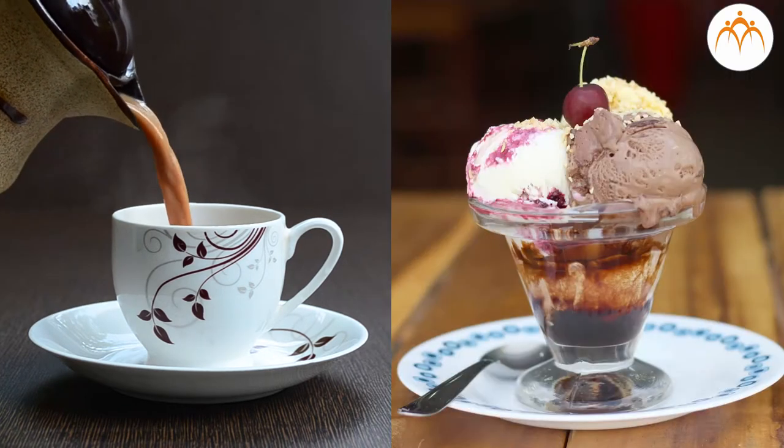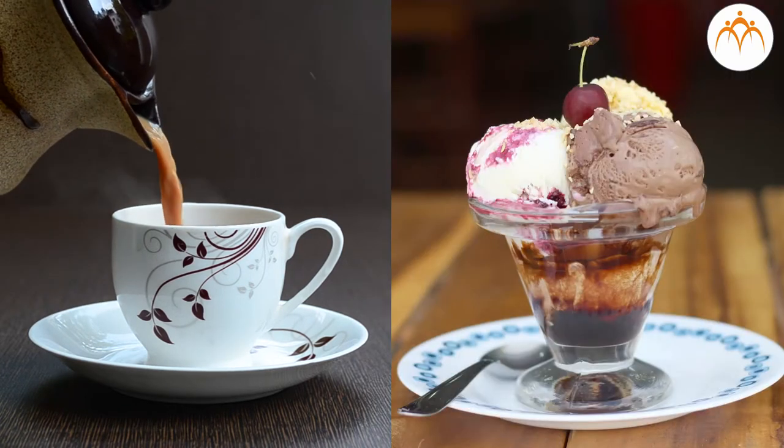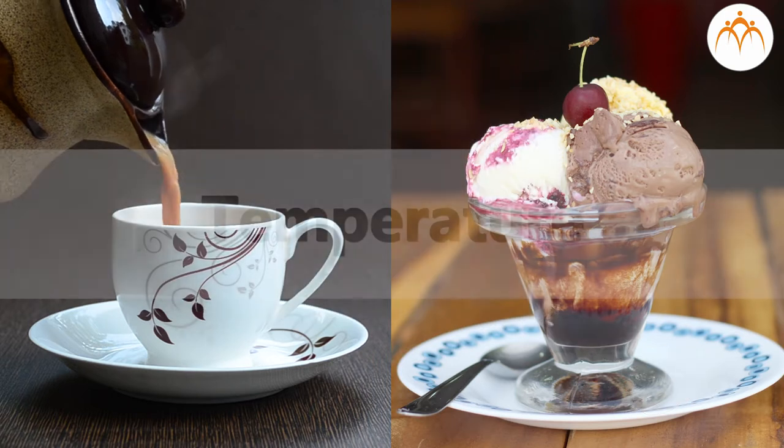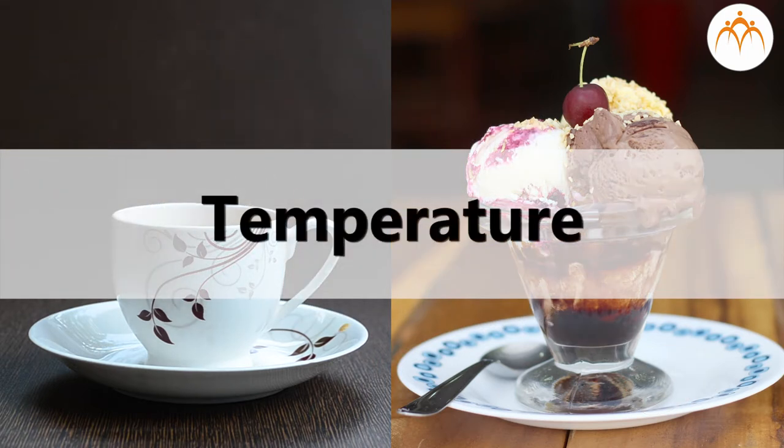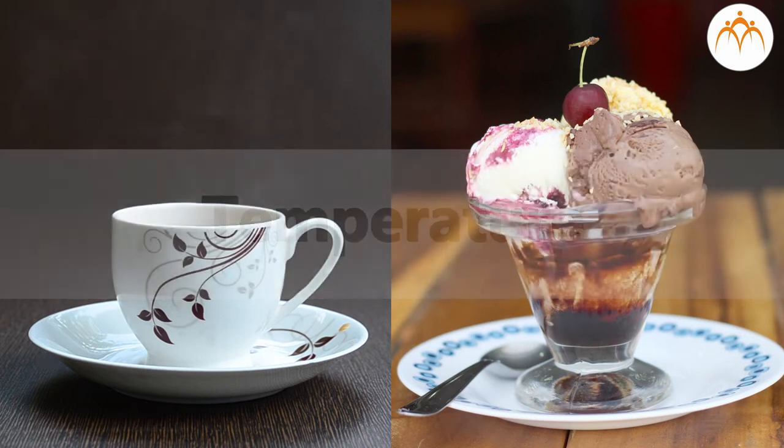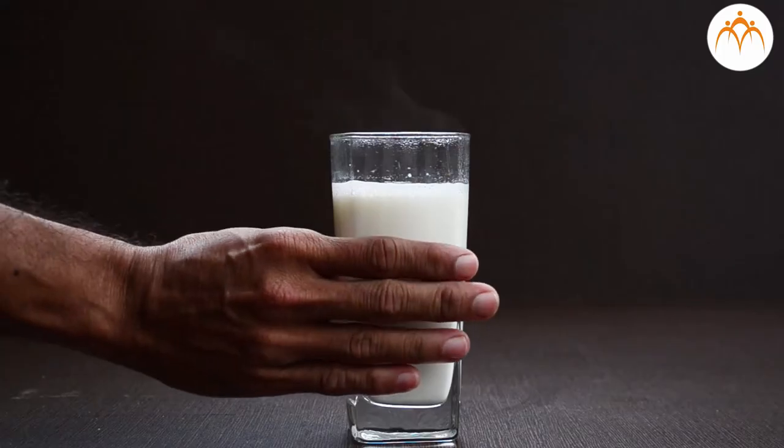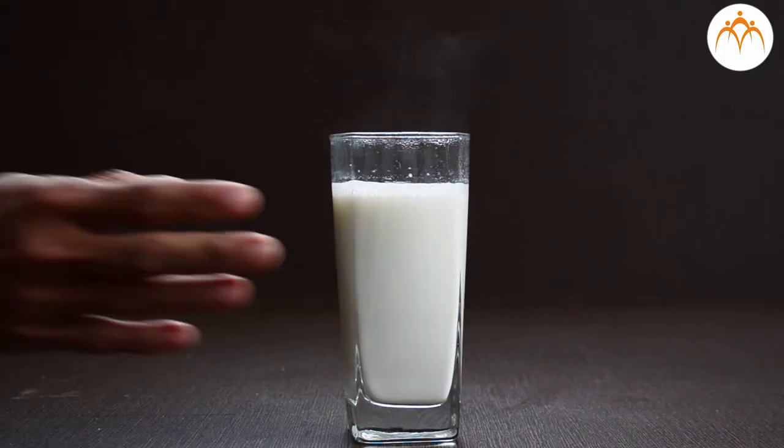Tea is hot, ice cream is cold. Which property of the object are we talking about? Yes, its temperature. We often relate the concept of temperature with hotness or coldness of the object when we feel it, either by touching it or when we feel it from a distance.